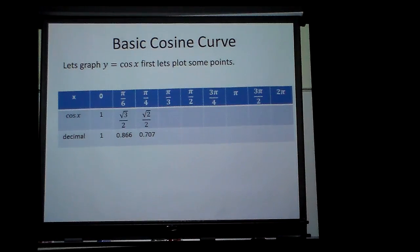At π over three, it is one half, which would be 0.5. And at π over two, cosine is zero, which would be zero as a decimal.